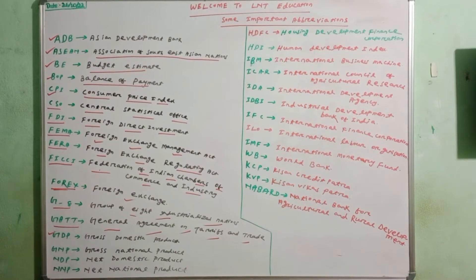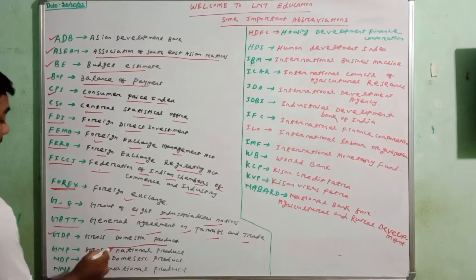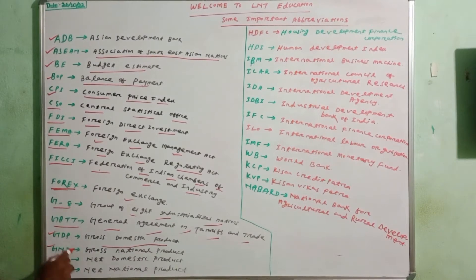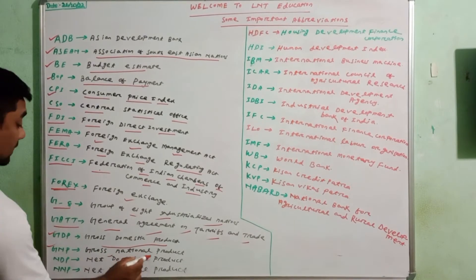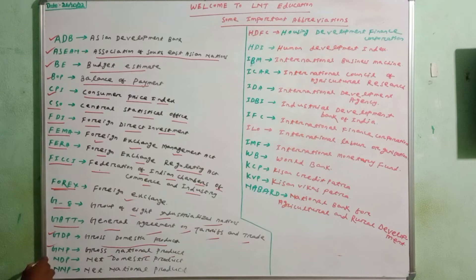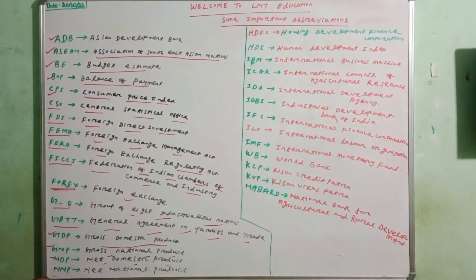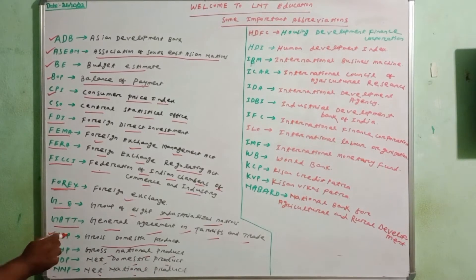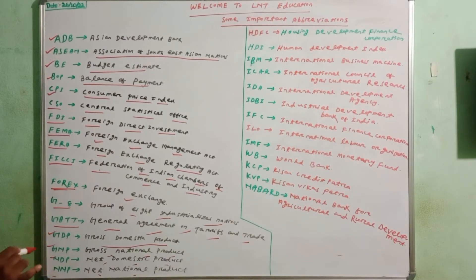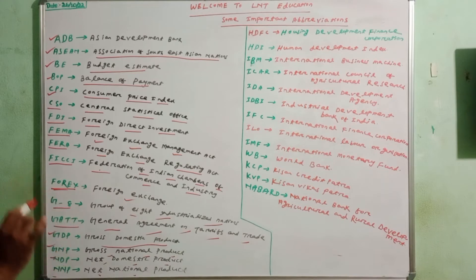GDP means Gross Domestic Product. GNP means Gross National Product. NDP means Net Domestic Product. NNP means Net National Product.